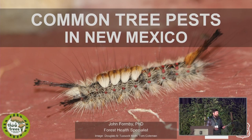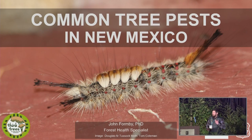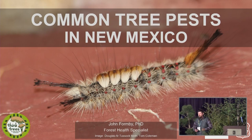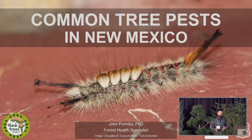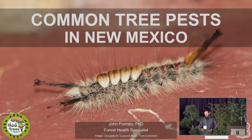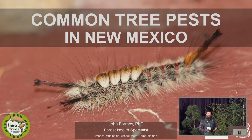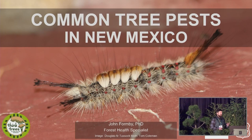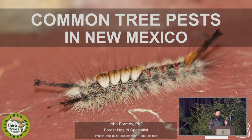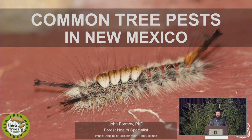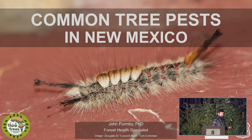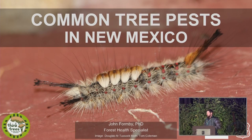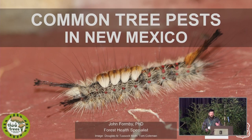So what is a pest? It's subjective. A pest can be a pest to one person, maybe not to another. But today I'm going to be talking about tree pests that cause harm or damage in some way, whether it's mortality from bark beetles or defoliation from caterpillars. Some of these are going to be primary pests that cause direct mortality, such as bark beetles. Others may defoliate the tree, cause some aesthetic loss, or just minor damage.